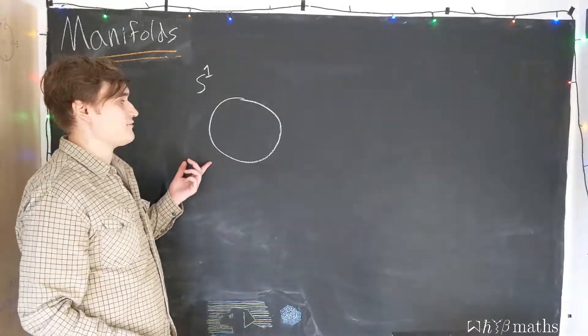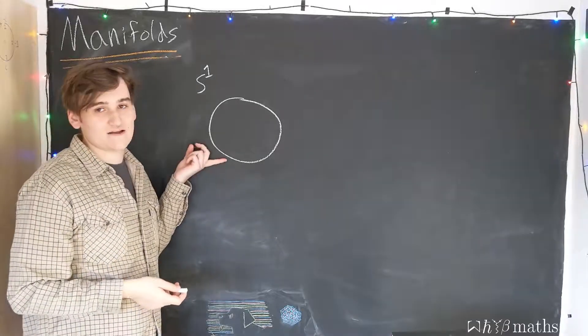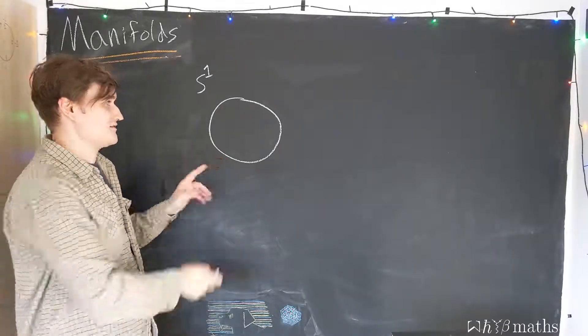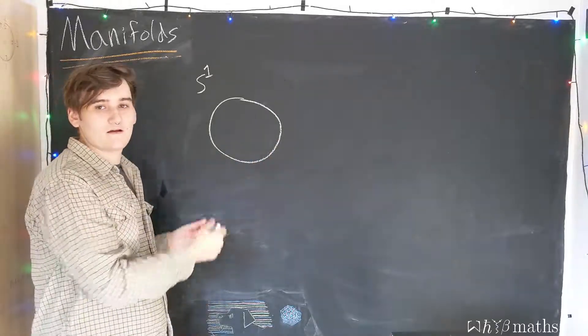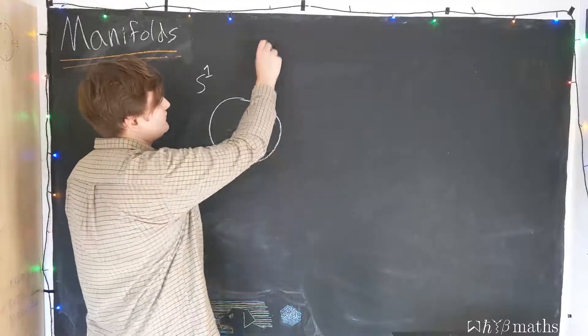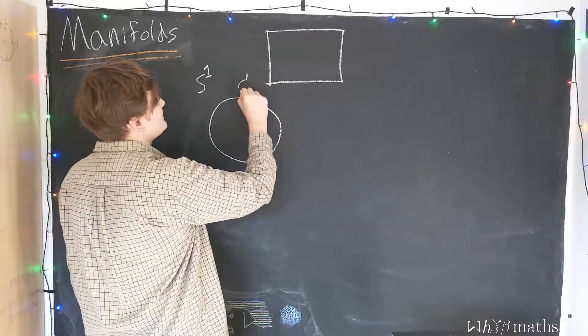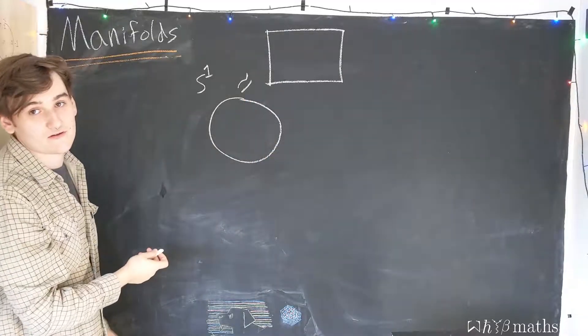And now we usually think about circles as being round. We know this is just an artifact of how it's embedded in this two-dimensional plane. The circle can be stretched and deformed as much as we like. We could deform it into something that looks like this. And topologically, these two things are completely equivalent.